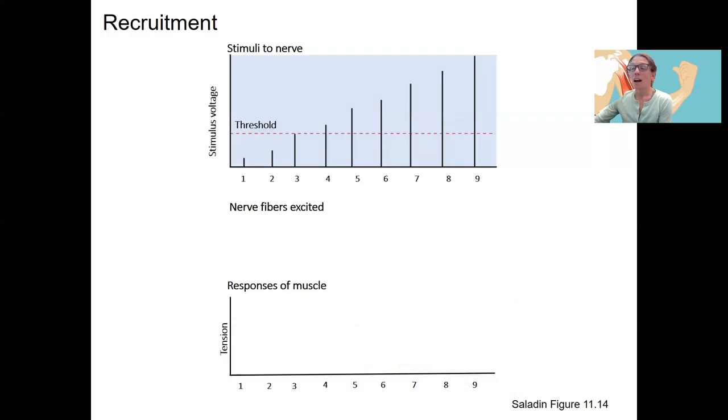I've already mentioned this idea of recruitment. This is what we talked about in terms of motor units. This is really the other reason that we have different motor units besides the cycling that prevents fatigue. We also have the ability to increase the amount of force generated, depending on how strong the stimulus is.